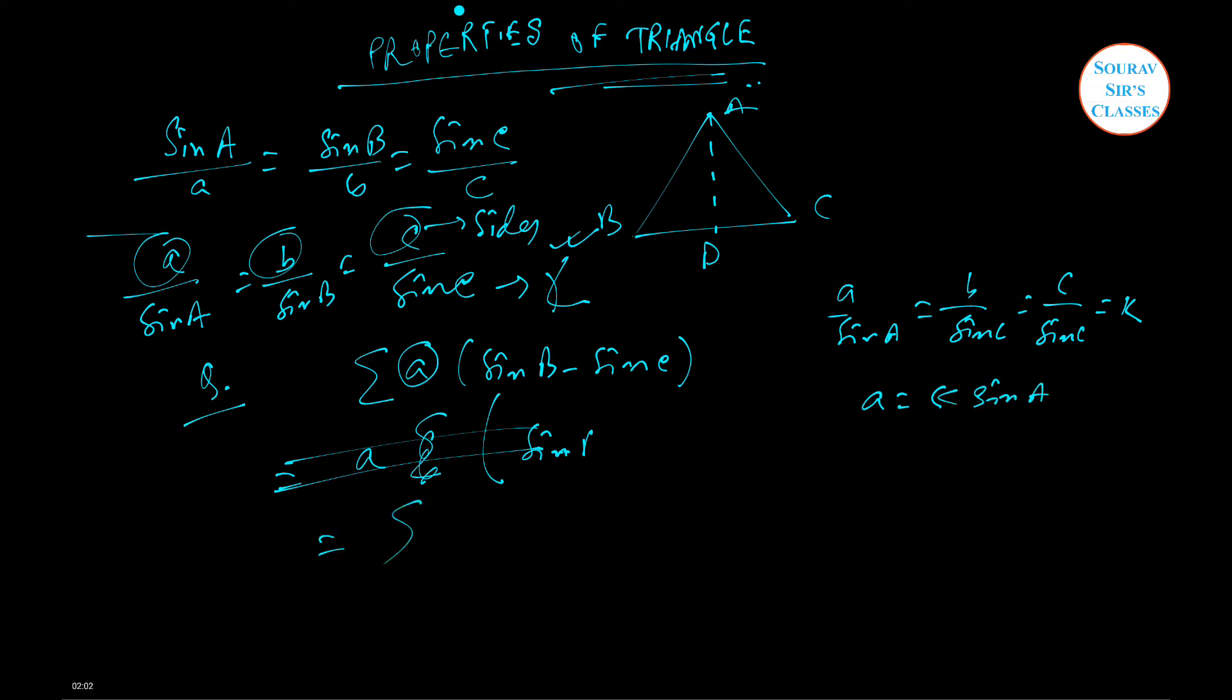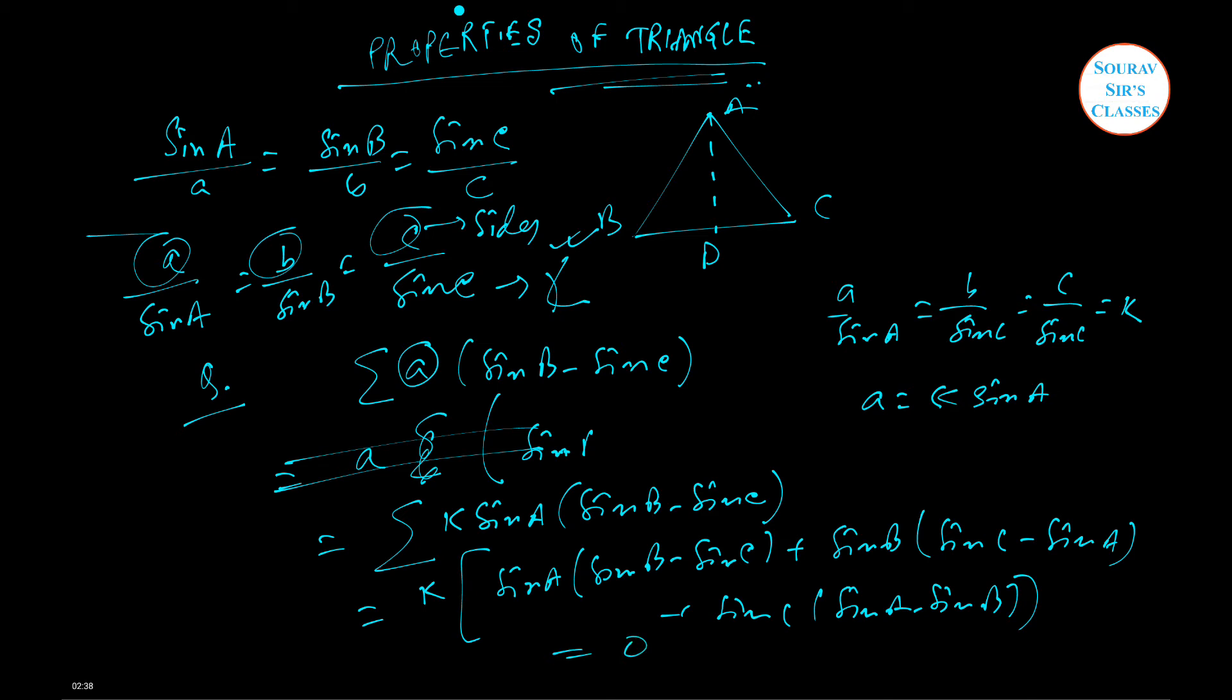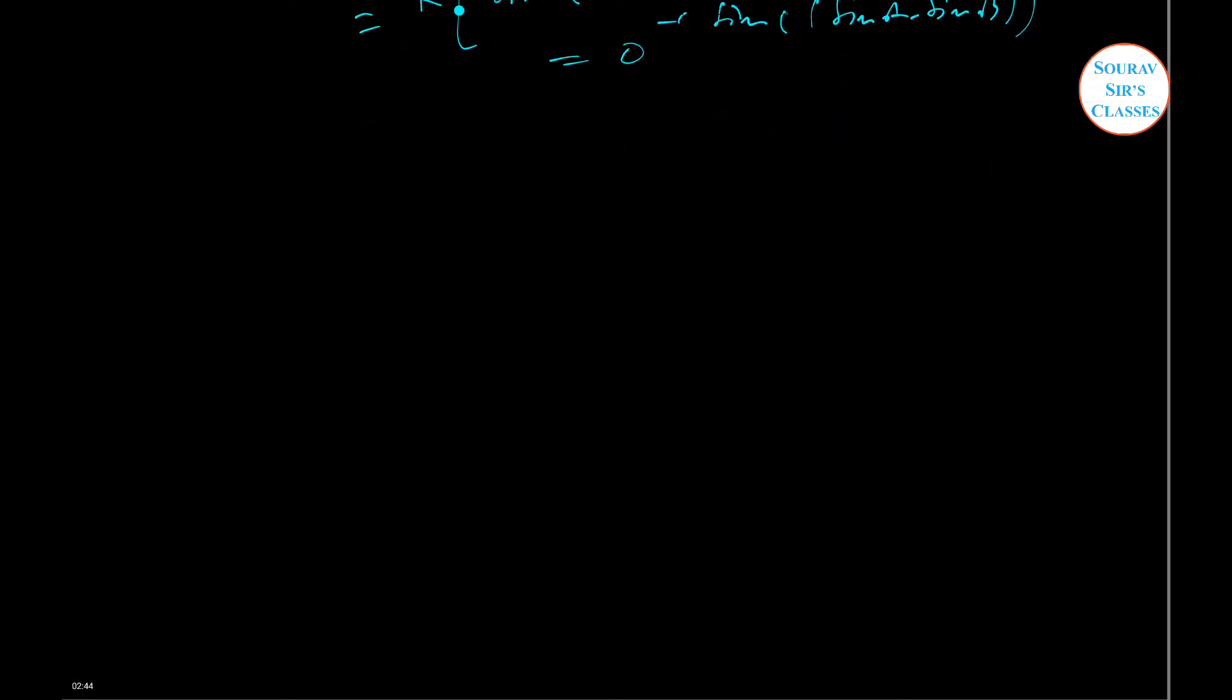So this is your first benchmark to solve it. k will be outside and we're going to change the values and positions and check what's happening. So k times sine A times sine B minus sine C, plus sine B times sine C minus sine A, and lastly sine C times sine A minus sine B. If you calculate this thing will be zero, so the answer to this particular question is zero.